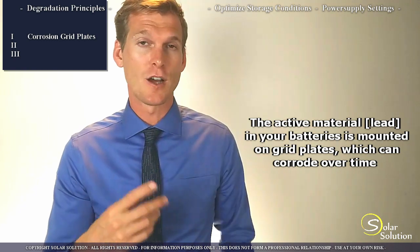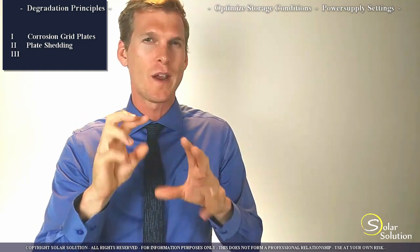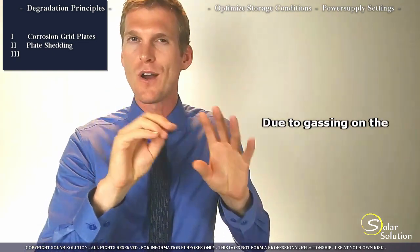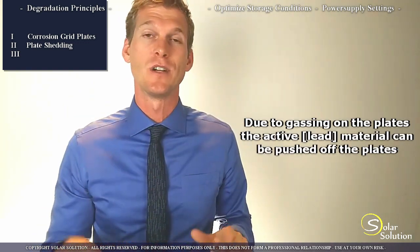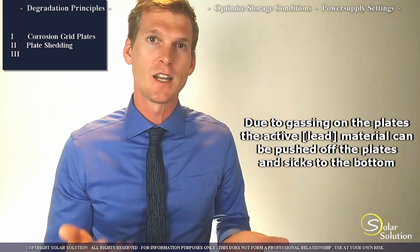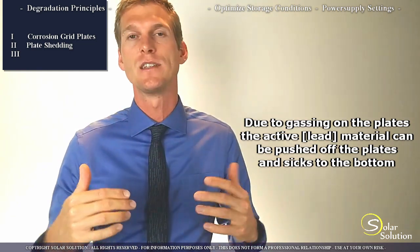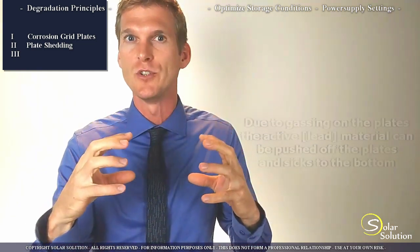The second thing that often happens in batteries is shedding of the active material. So what this means is that during the charging as the battery reaches the end of a charging cycle so the battery is almost full, small air bubbles are being created on the lead plates and these air bubbles then push off part of the lead. This lead falls down to the bottom of the battery where it's no use to us anymore. It cannot be reclaimed and the result is that the capacity of your battery slowly reduces over time.